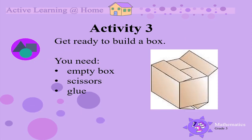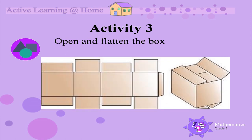Activity 3. Get ready to build a box. You need an empty box like a cereal box or a washing powder box, scissors and glue. Carefully open the box and flatten it. When you flatten the box, you change a 3D object into a 2D shape.